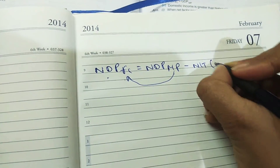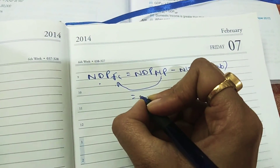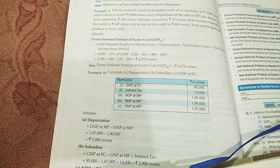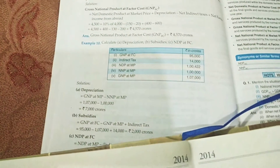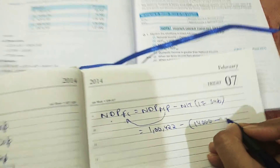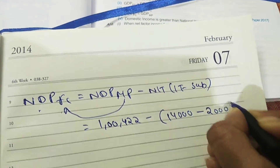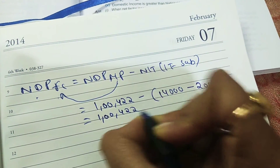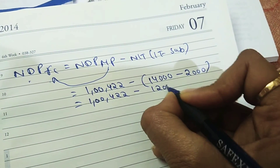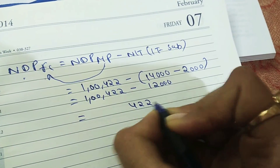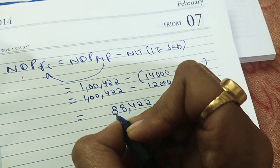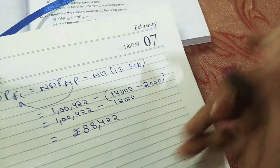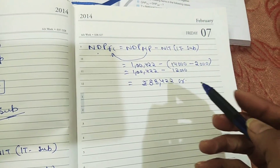To convert MP to FC we deduct NIT, which is IT − Subsidies. NDP at MP = 1,02,422; IT = 14,000; Subsidies = 2,000. So NDP at FC = 1,02,422 − 14,000 − 2,000 = 1,02,422 − 12,000 = ₹88,422 crore.